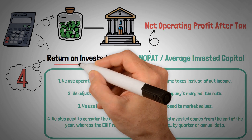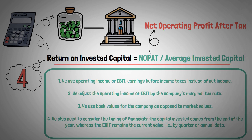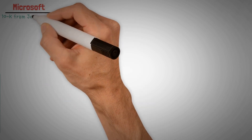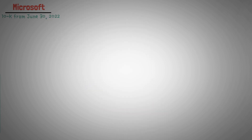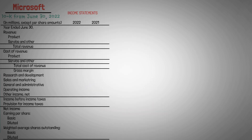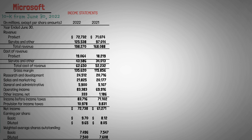Now that we know the formula, let's start to find the numbers to plug in. The first company I would like to explore is Microsoft. We will calculate based on the latest annual 10-K from June 30, 2022. All numbers will be in millions unless otherwise stated. The first number we need is Earnings Before Interest and Taxes, or EBIT — also known as Operating Income — which equals $83,383 million.